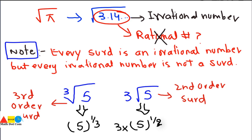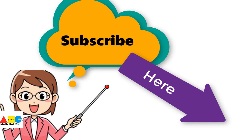That's all about what a surd is, what the different examples are, and how you can identify whether a given number is a surd or not. In our next lecture, we will see the different operations on surds — how you can add or subtract surds and what laws are required for multiple operations on surds. Thank you for watching. If you like this video, please don't forget to subscribe to our channel math.com for more updates. Thank you.